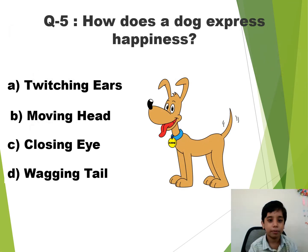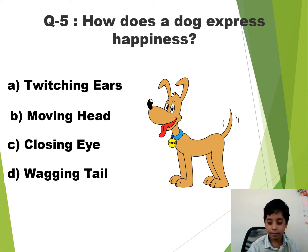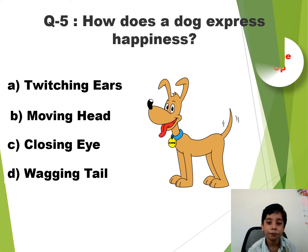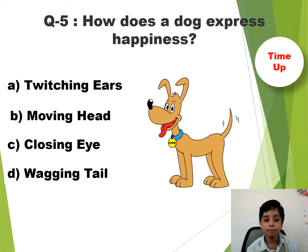Question number 5. How does a dog express happiness? The time starts now. Time up. So the answer is D — Wagging tail.